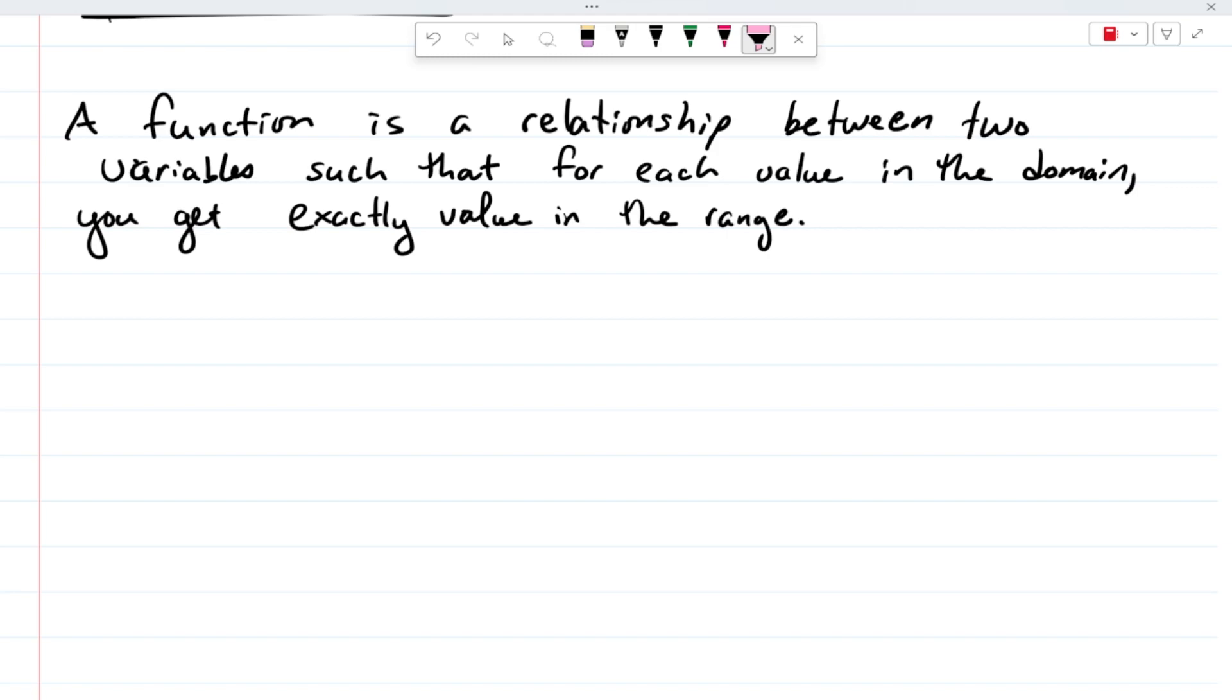Now, the key to this entire definition of a function is right here. For each value in the domain, you get exactly one value in the range. That's the key to this. Now, I'm going to jump around here a little bit in terms of your reading because it makes a lot more sense if I just set it up right from the start.